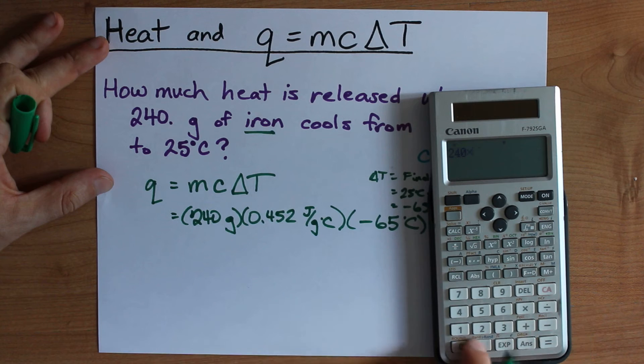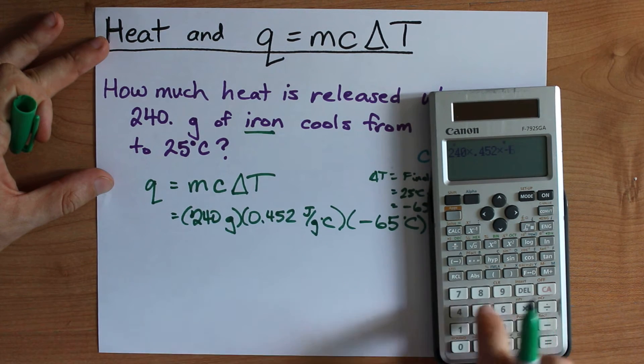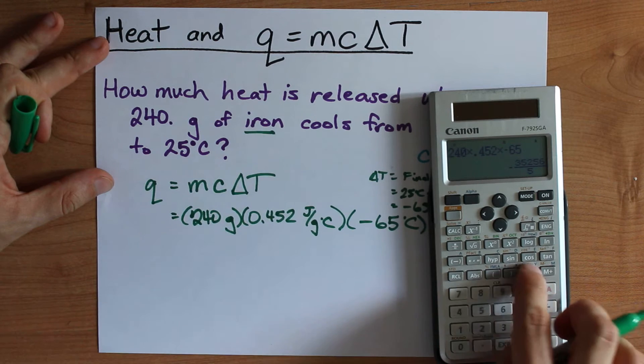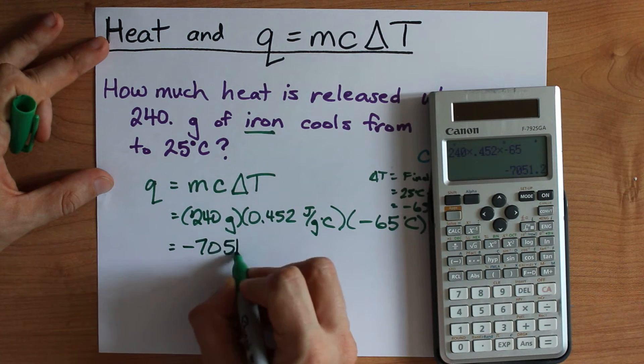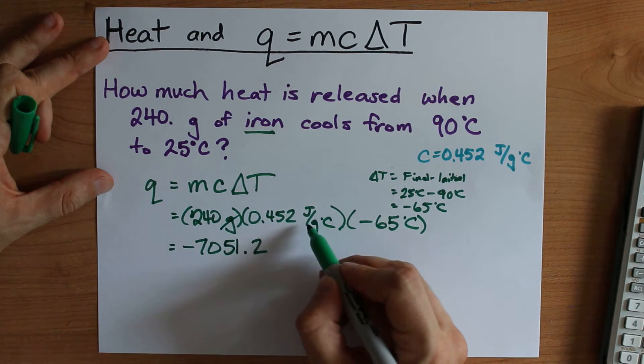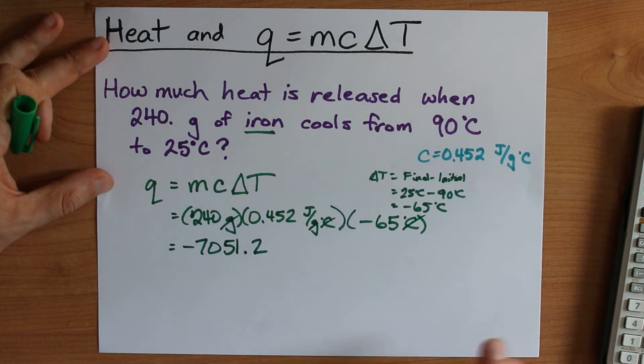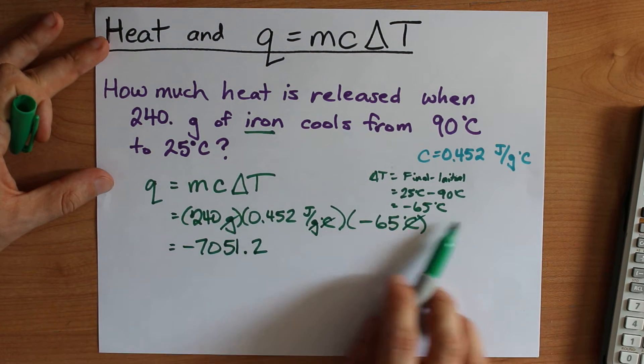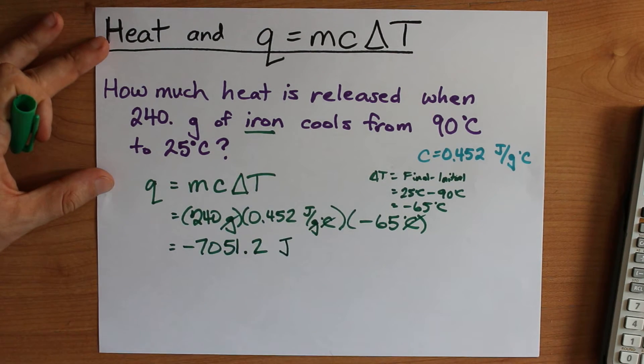240 grams times 0.452 joules per gram degree Celsius times negative 65 gives me a value of negative 7051.2. My grams cancels with the unit of grams and my degree Celsius cancels with the unit of degree Celsius. That's why this unit for specific heat capacity works. And I'm left with joules.